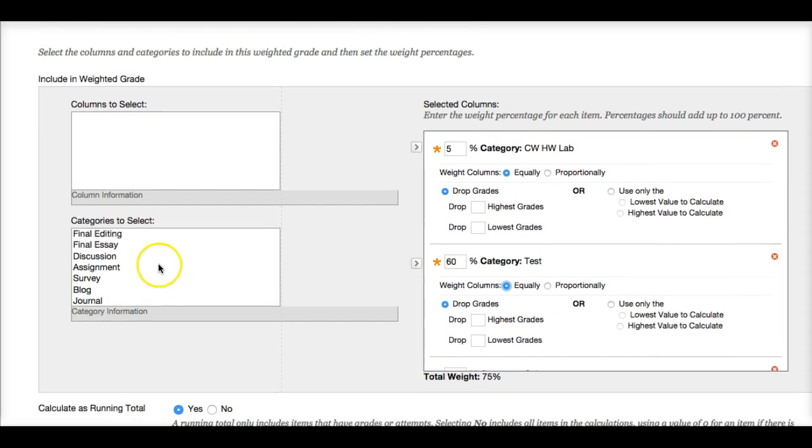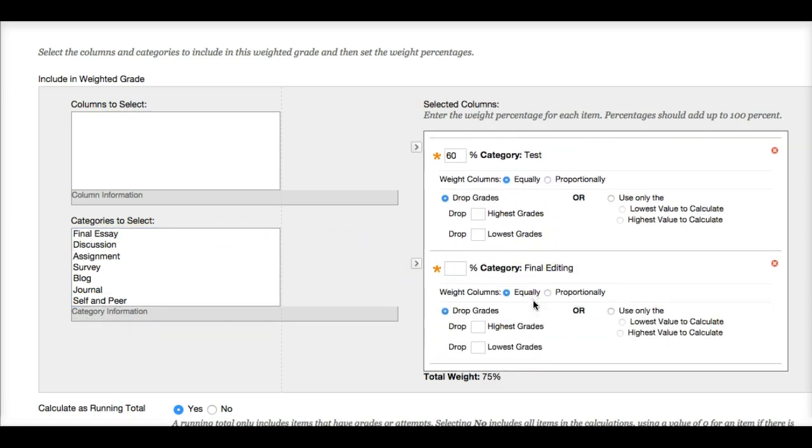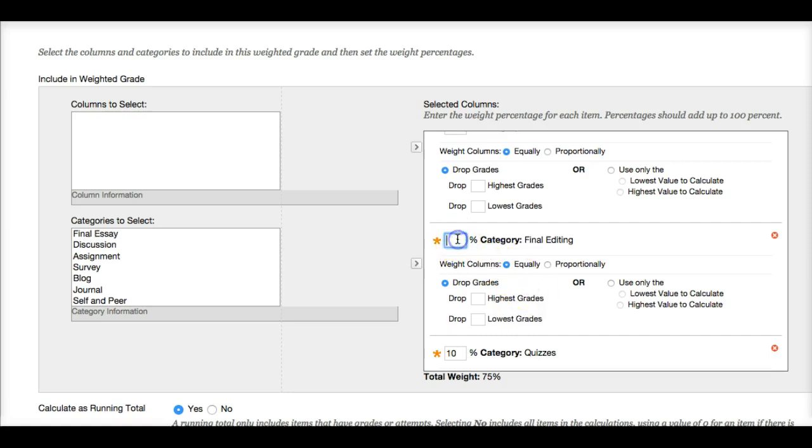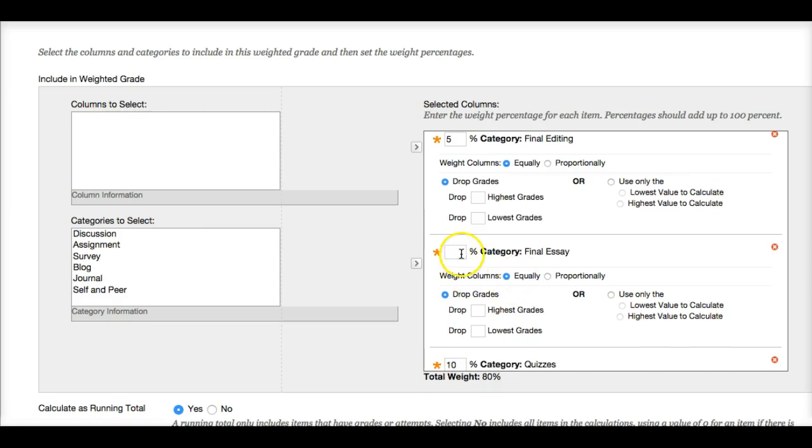And then we had the final editing exam. You'd have to find it. Just scroll down. Final editing was 5%. And so you can see the total weight is adding up. We're at 80%. And now I need to add the final essay. And so the final essay is worth 20%. And so you want to make sure that your total weight is equal to 100%.